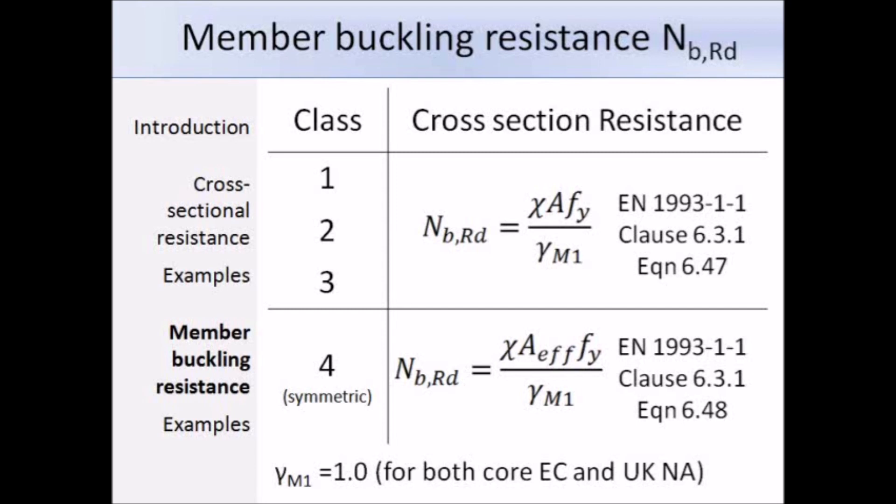We have chi, which is the reduction factor, times the area, times the yield strength, divided by partial factor gamma M1, which is equal to 1. The area and yield strength are not too difficult to find, but we need to work out the value of this reduction factor chi.